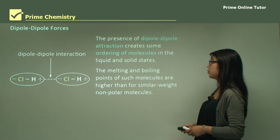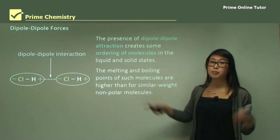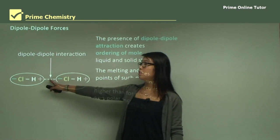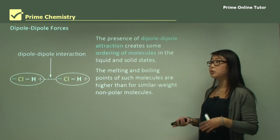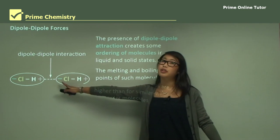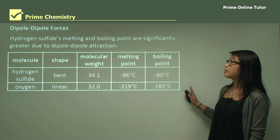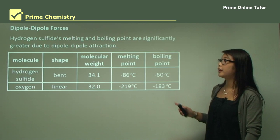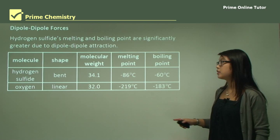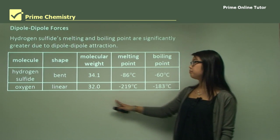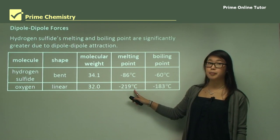The melting and boiling points of such molecules are higher for similar-weight non-polar molecules. We need energy to break up these forces between molecules, so if similar-weight molecules have stronger attraction between them, they have higher melting and boiling points. Hydrogen sulfide's melting and boiling points are significantly greater due to dipole-dipole interactions. Hydrogen sulfide is a bent molecule of similar weight to oxygen, which is linear, but its melting and boiling points are quite higher compared to oxygen.